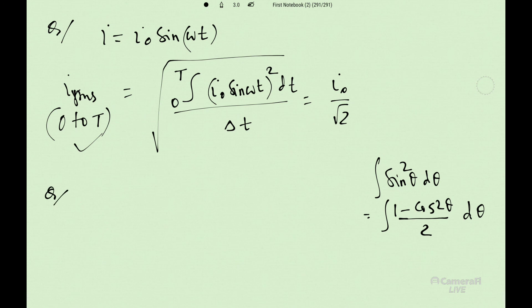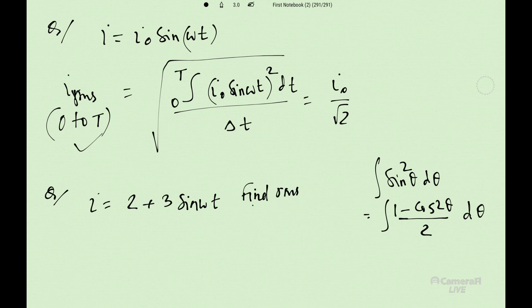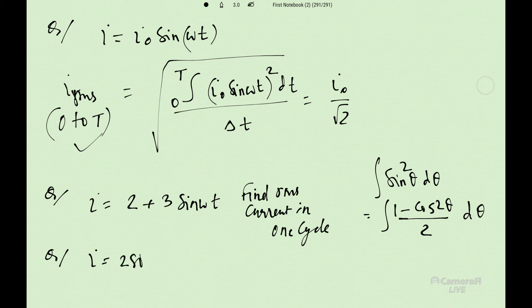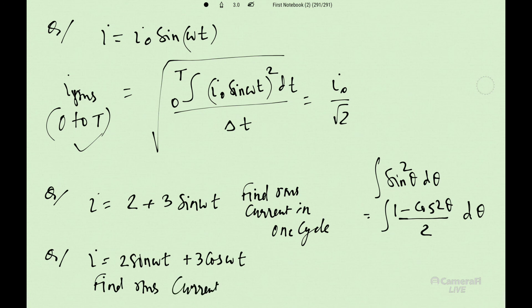Let me try one question: i = 2 + 3 sin(omega t). Find RMS current in one cycle. I will also post this question in the DPP. Also: i = 2 sin(omega t) + 3 cos(omega t). Find RMS current in one cycle.